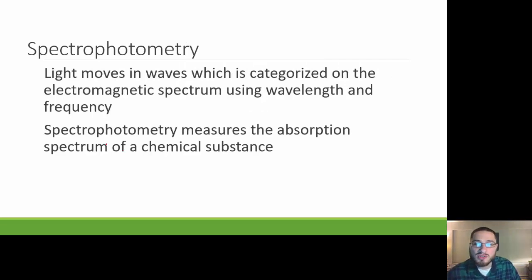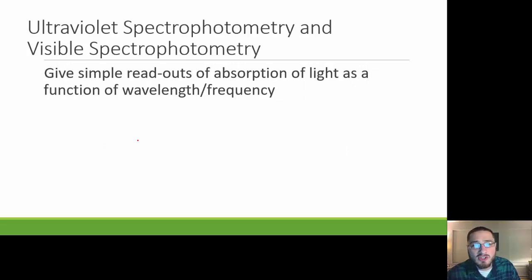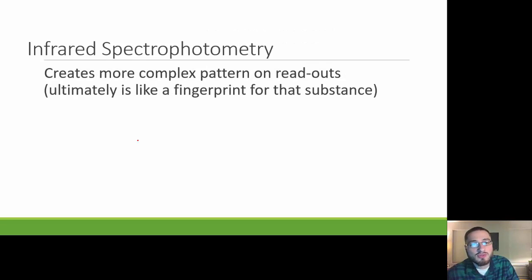Spectrophotometry: light moves in waves, which is categorized on the electromagnetic spectrum using wavelengths and frequency. Spectrophotometry measures the absorption spectrum of a chemical substance. By separating those components and then looking at the wavelengths, we'll be able to identify this specific substance. Ultraviolet spectrophotometry and visible spectrophotometry give simple readouts of absorption of light as a function of frequency. Infrared spectrophotometry creates more complex patterns on readouts. Ultimately, it's like a fingerprint for that substance. If we have a control for a substance, we can use that control in order to see that it's the same exact fingerprint for this mystery substance, so we know that it has to be the same substance.